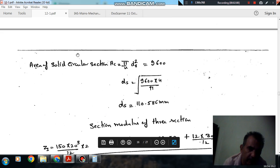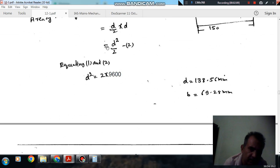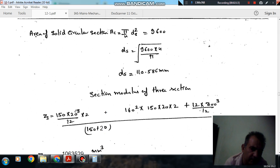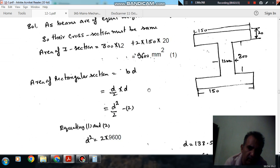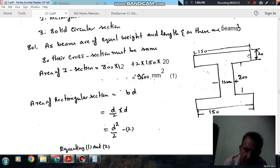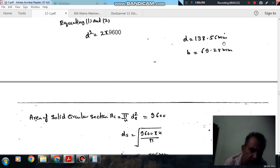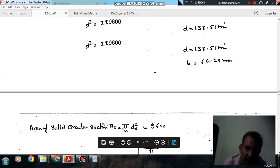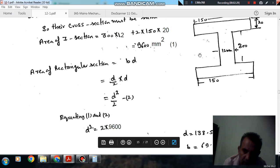Now we will find out the section modulus of all these three sections: I-section, rectangular section, and circular section. For I-section, first of all we find out the moment of inertia, that is 150 into 20 cube. There are two flanges, so these are the moment of inertia of these flanges about their own axis.